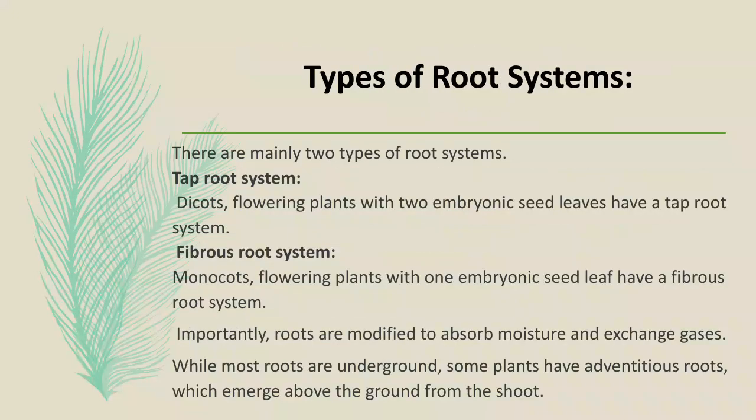There are mainly two types of root systems. The tap root system — for example, dicot flowering plants which have two embryonic seed leaves have a tap root system. The fibrous root system — monocot flowering plants with one embryonic seed leaf have a fibrous root system.